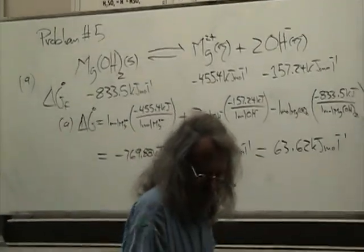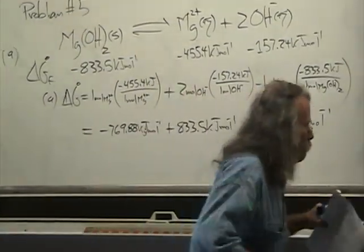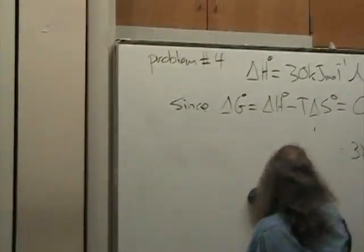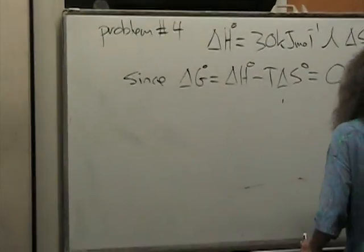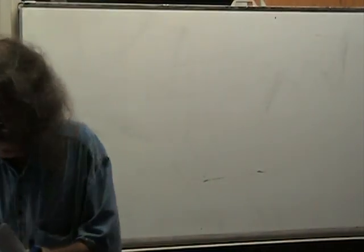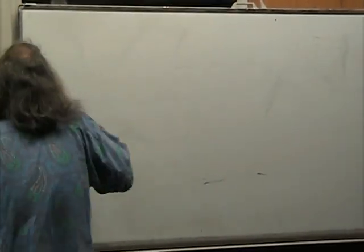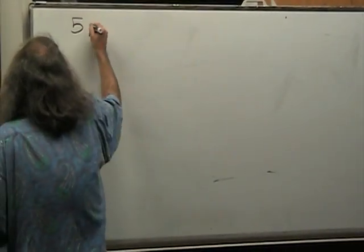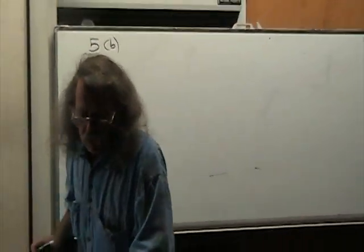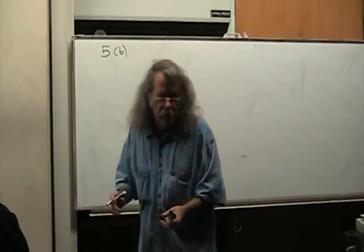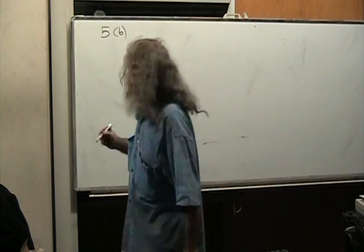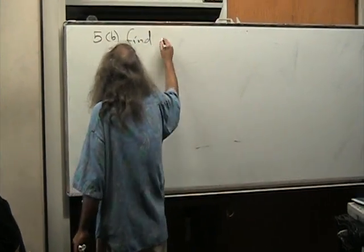So, 5B. I'm going to erase a board over here. Okay, 5B. Ready? Okay. 5B is we need to find Pk.